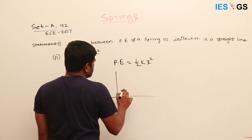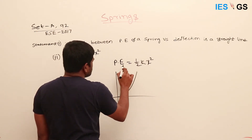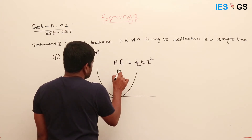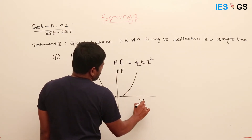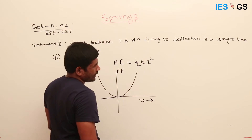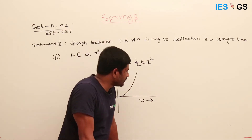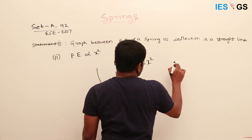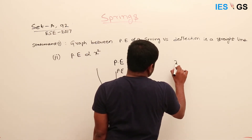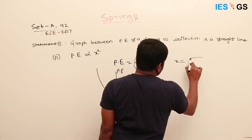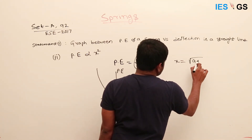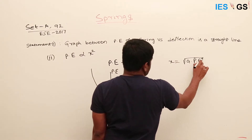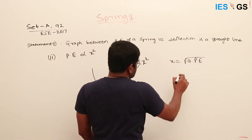The graph is parabolic and symmetric about the PE axis. This is the PE axis and this is the X axis. To understand this, assume a constant so that X equals the square root of some constant times PE.